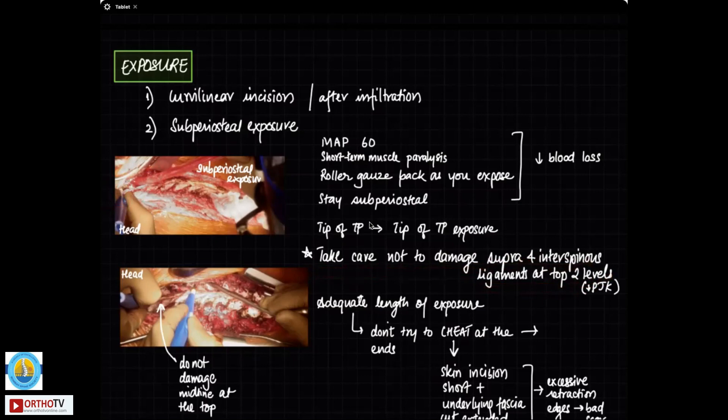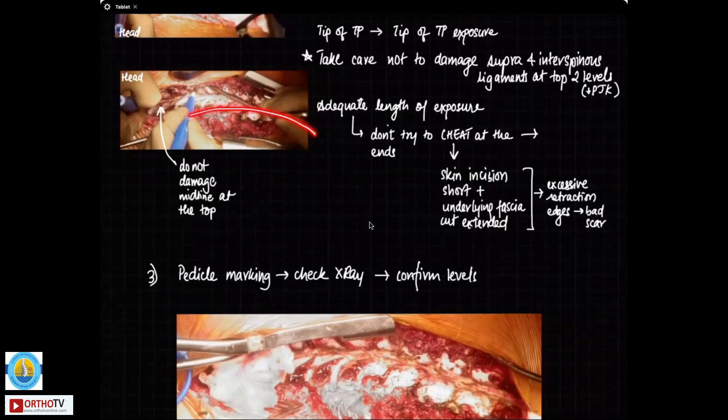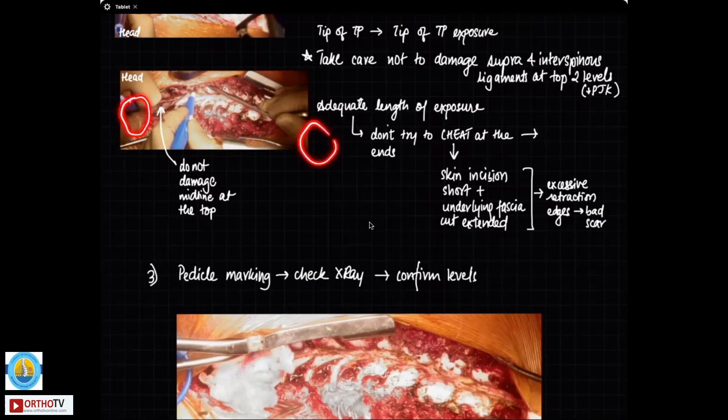Always have an adequate length of exposure. Your incisions usually are very long. So there is no point cheating at the ends. I have seen a lot of people struggling because they want to keep their incision smaller and then undermine at the edge of the skin and try to take a muscular exposure much longer than what the skin will allow. And this is not very useful and most importantly, it compromises the pedicle screw insertion at the top. If you don't have a good exposure, you might make errors in putting these screws at the top and remember that your ends of your construct, the anchors are most important.